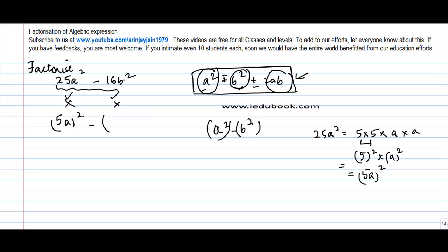Similarly, if you do it for 16b square, it can be written as 4 into 4 into b into b. So, these two numbers are appearing twice. So, 4 square into b square or 4b whole square.